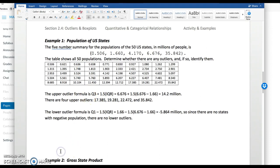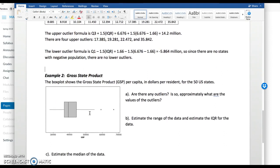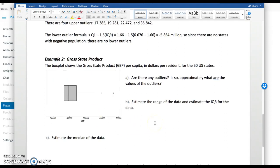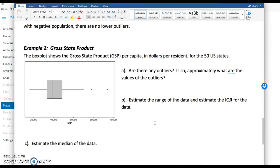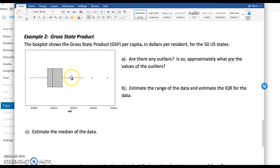I'm going to move up to example two. We're still looking at the 50 states, but now we're looking at gross state product. This for all 50 states shows the gross state product, GSP per capita, dollars per resident for the 50 states. Since we have the box plot, we have visualization.